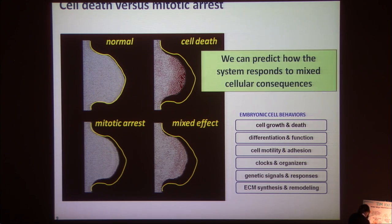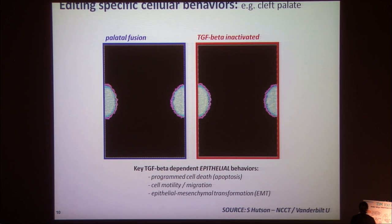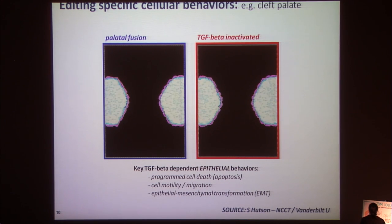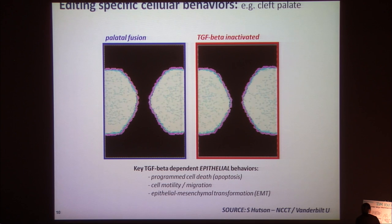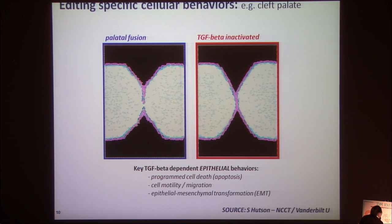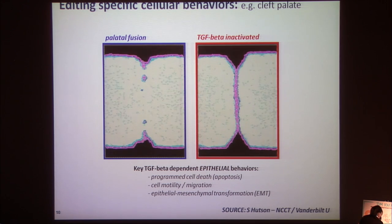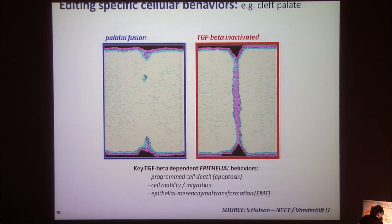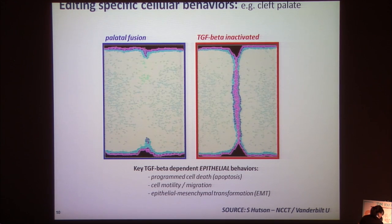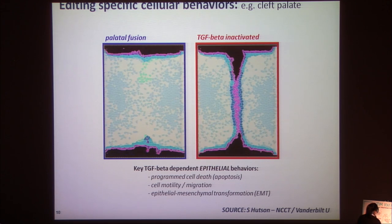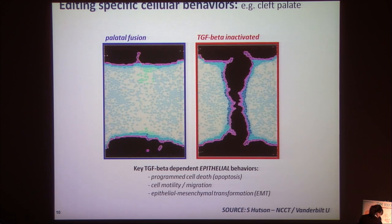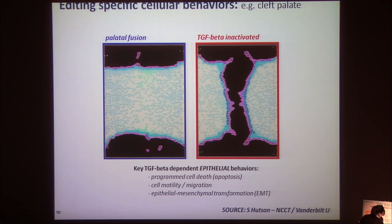We can now start editing these specific cell behaviors. I'll end with a prediction of cleft palate developed by Shane Hudson — again, he's at the meeting and would love to talk to you about the types of work he's doing. In his simulation, this is looking at an important defect, cleft palate, which occurs in the human population. He's modeling different aspects of palatal fusion at the cellular level and then perturbing these different cellular processes with various types of imputed data. He can actually simulate what might happen if the TGF-beta pathway, for example, is disrupted.